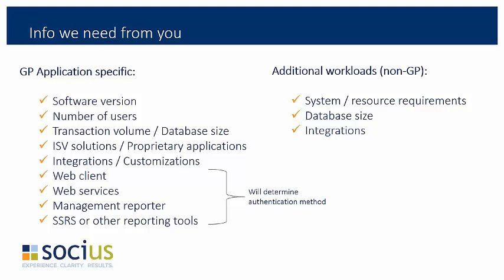In these cases, we'll need to create a domain controller in Azure, create a site-to-site VPN to your network, or possibly use Azure Active Directory. Are there additional workloads other than GP to be migrated to the cloud? What are the system requirements for these applications? Do they have database or file system requirements? How big are the databases or folder shares? Do these applications integrate with GP or other applications? How do they connect and where does the data go? These are all questions that need to be answered for a successful migration to the cloud.